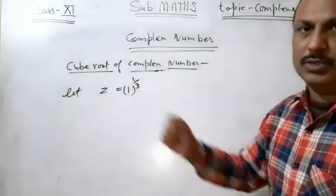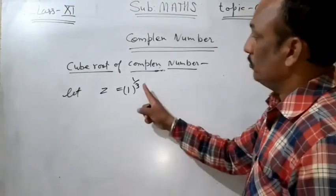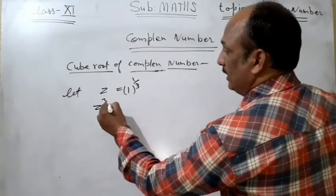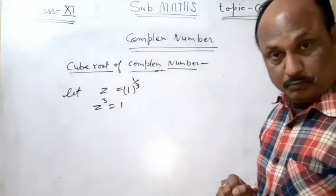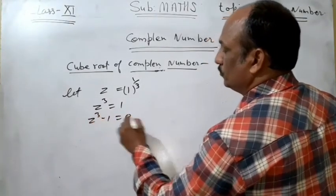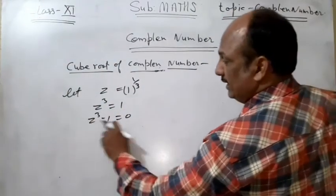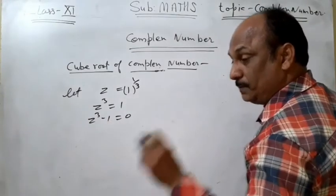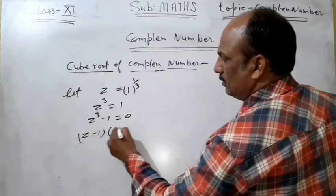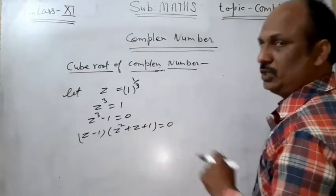Cube root of 1 means 1 raised to power 1/3 equals z. If we simplify, we cube both sides, then we get z³ = 1. Now if we transfer 1 to the LHS, it becomes an identity: a³ - b³ = (a - b)(a² + ab + b²) = 0.